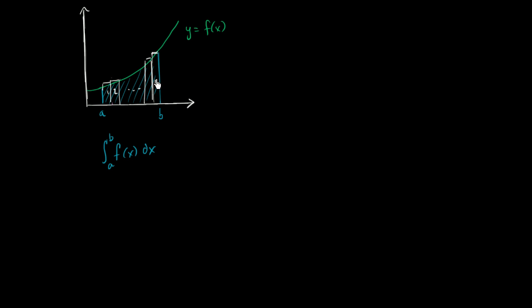So this is the nth rectangle, and they all have the same width. There are definitions of integration where you don't have to have the same width, but let's say that each of those widths are delta x. The way that we calculate delta x is we take b minus a and divide it by n.